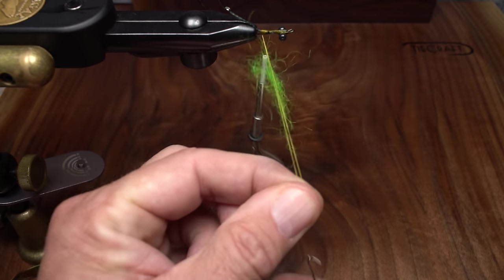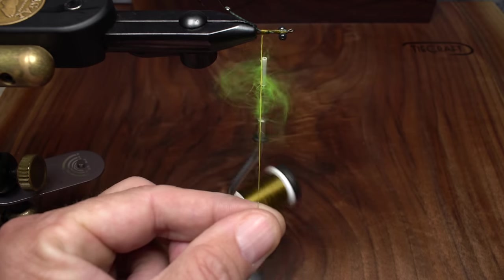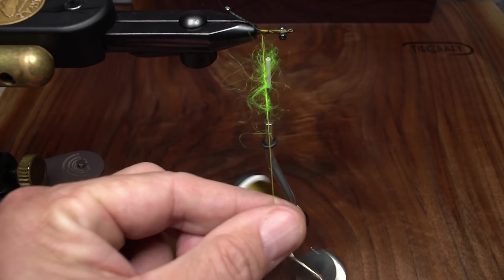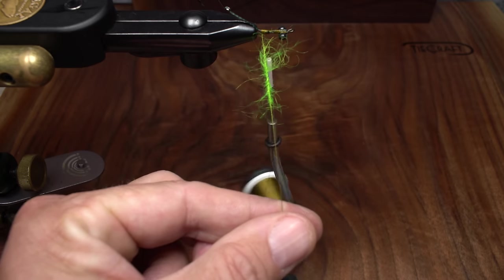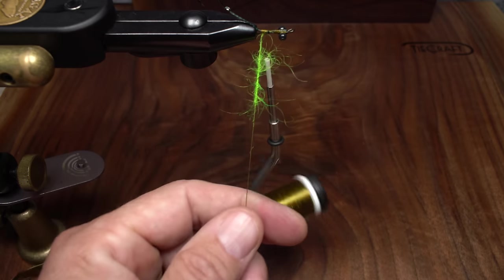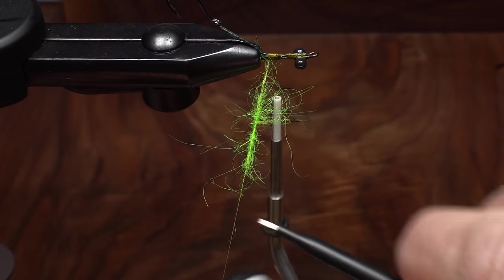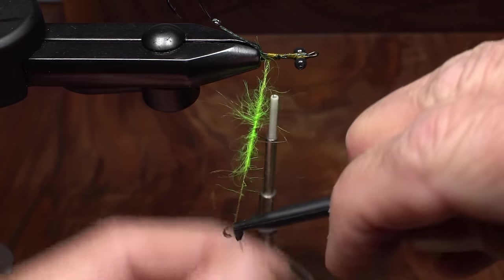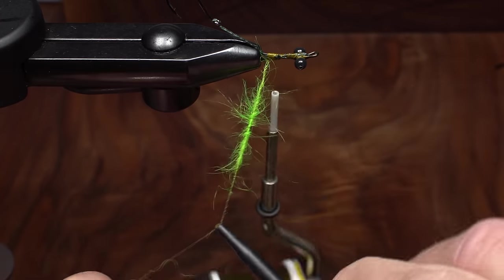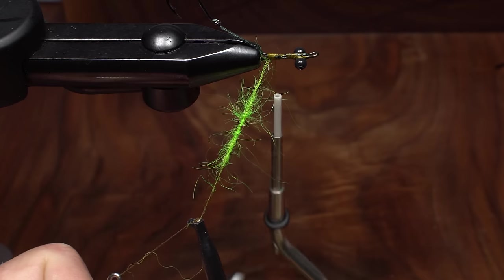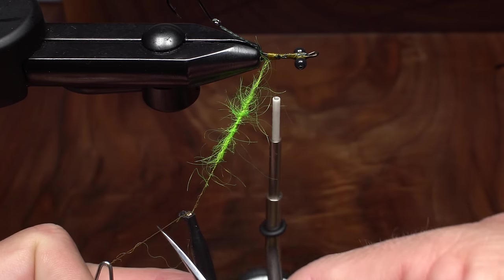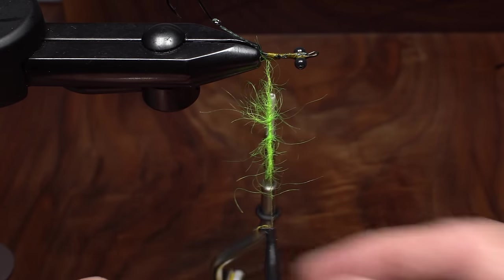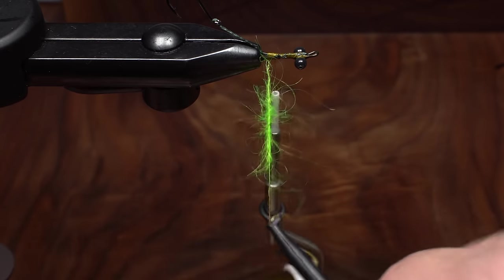Place a dubbing whirl into the bottom of the loop and give it a real good clockwise spin to cord up the dubbing into a fuzzy rope. Rather than wrapping with the whirl, I like plunger style hackle pliers instead. Take a couple of thread wraps around the tool's hook before closing them down to avoid slippage. This allows me to snip the excess dubbing loop off close and makes for easier wrapping of the noodle.